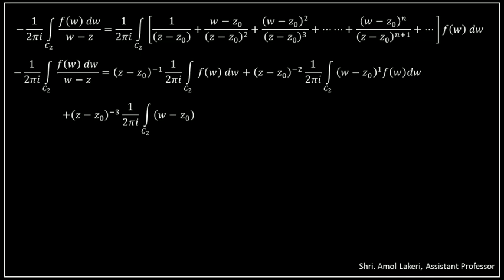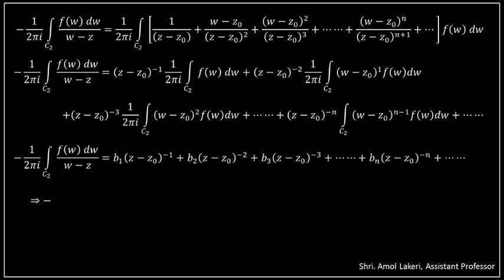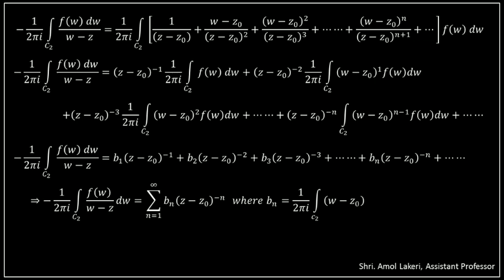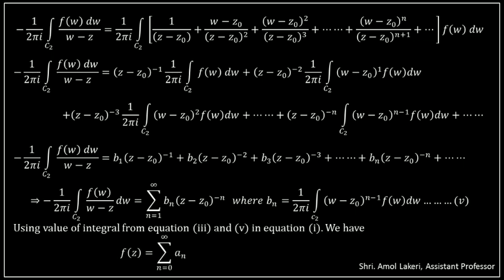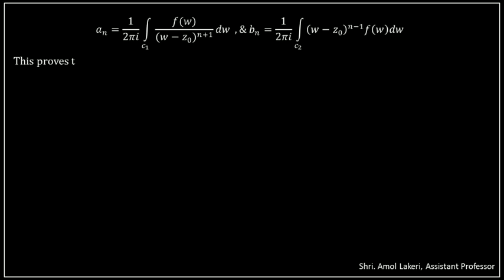Using the same argument as in the first integral, and using constants b1, b2, b3 and so on instead of the integrals, the integral on the left-hand side is expressed as the sum of bn times (Z minus Z0) raised to minus n, where bn is given by the integral. Using the values of the integrals from equations 3 and 5 in equation 1, we get the required Laurent series of function f of Z over region D. Here, an is given by 1 upon 2 pi i, integration over C1 of f of W divided by (W minus Z0) to the power n plus 1, and bn equals 1 upon 2 pi i, integration over C2 of (W minus Z0) raised to n minus 1 times f of W. This proves the required theorem.